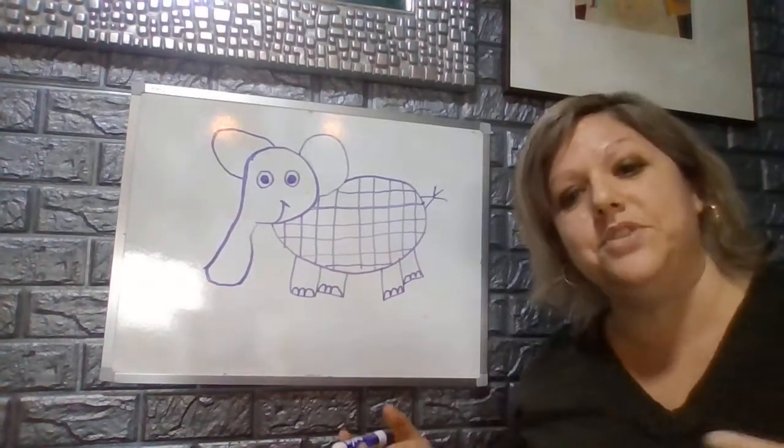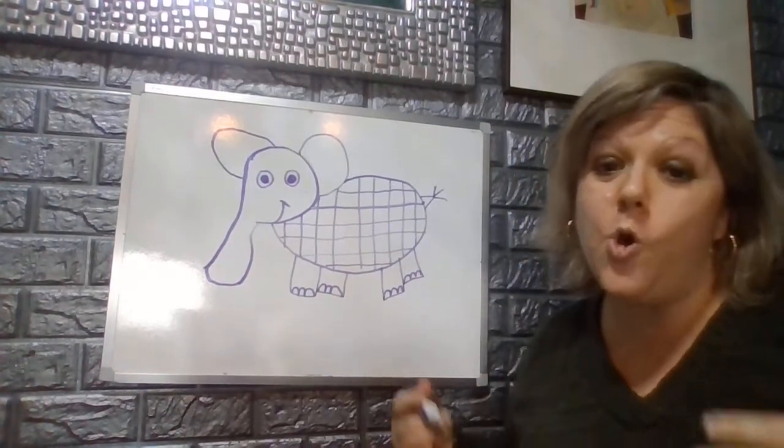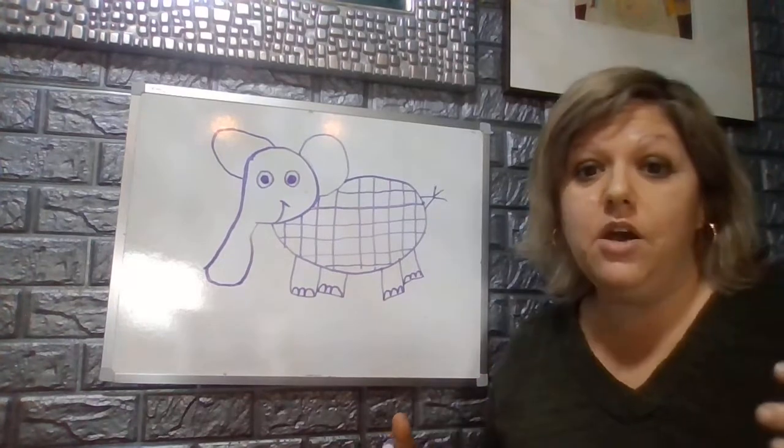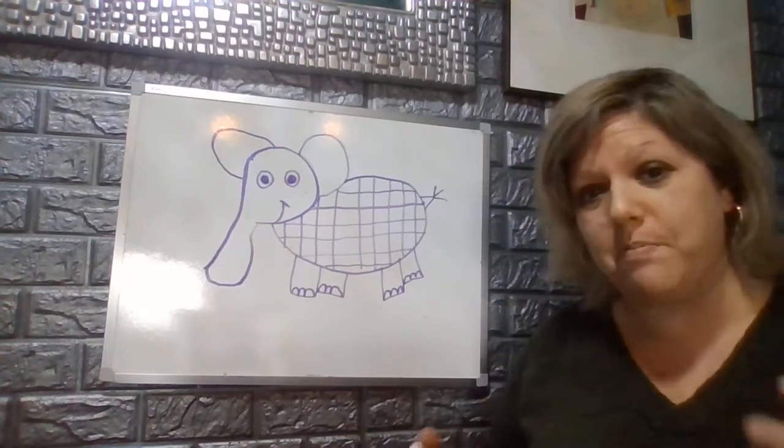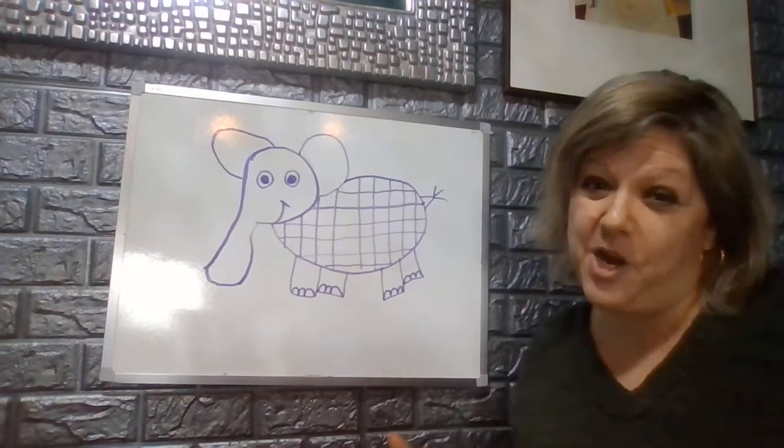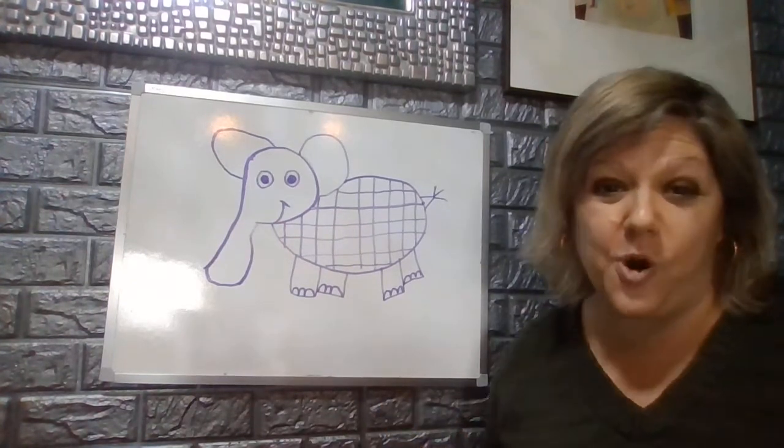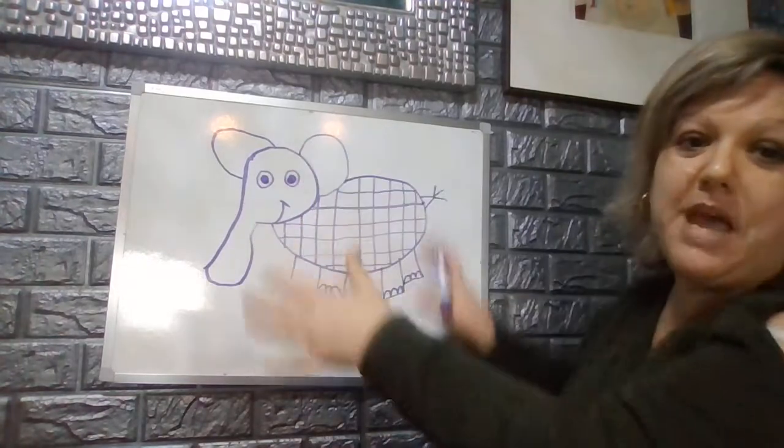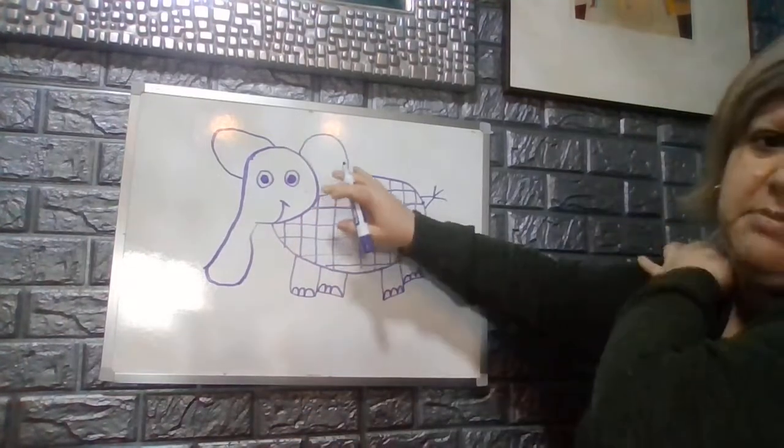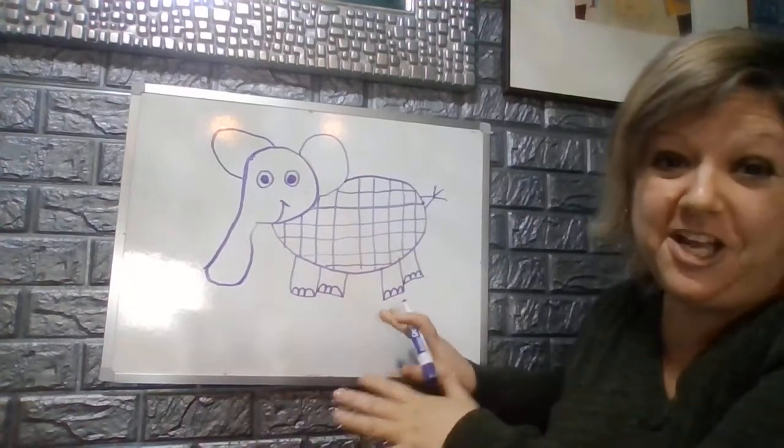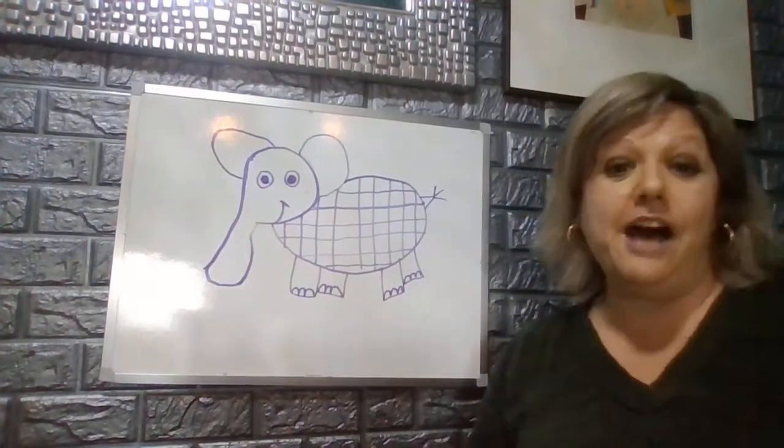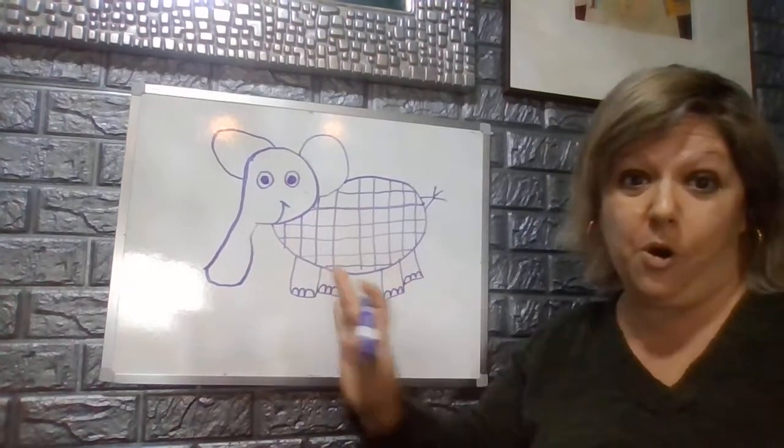Once I'm done sketching my Elmer the elephant with my pencil, I'm going to take either a black brown or any dark color marker or crayon or oil pastel that I have in my home or at school or at work, and I'm going to make it bold by outlining it. So as you can see mine's outlined in purple, so it sticks out for the viewer to see.